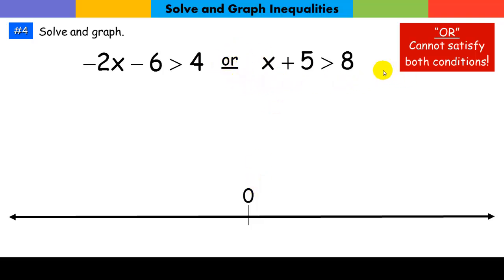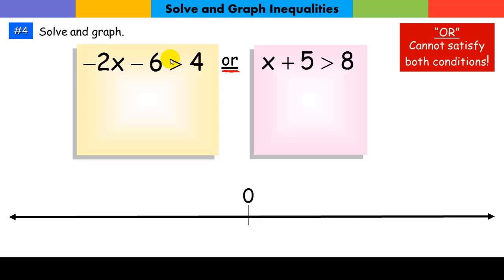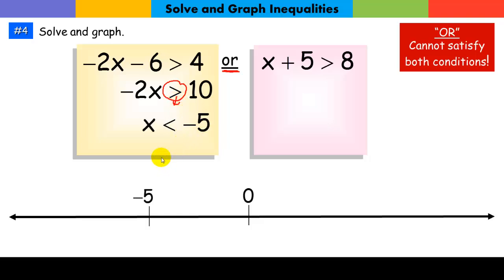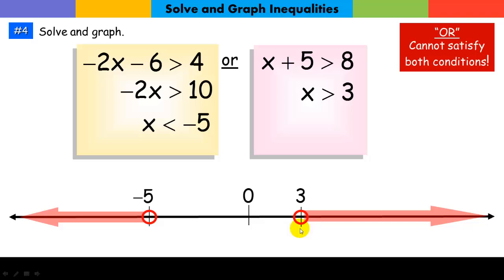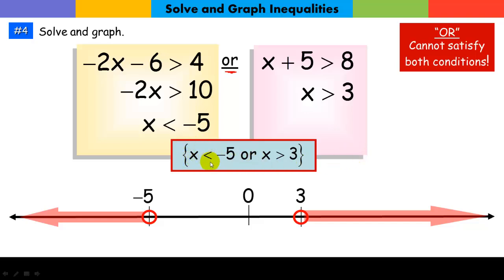Now we're going to look at the OR situations. We basically have two inequalities we graph simultaneously on the same line. For the first: add six and divide by negative two, which changes the sense of the inequality — I have one boundary point. For the second, subtract five — I have the other boundary point. x is less than negative five — that's one graph — and x is greater than three — that's the other. This is obviously an OR situation because no number can satisfy both conditions. We write: x is less than negative five or x is greater than three.